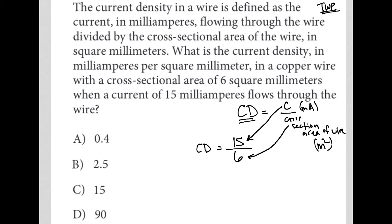15 divided by six, looks like if I look at my answer choices, they're wanting a decimal or a whole number. So, I'm going to go to my calculator and just do 15 divided by six, and what I get is 2.5. So, CD equals 2.5, and therefore, the correct answer here is choice B.